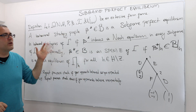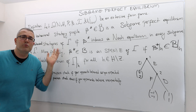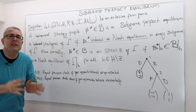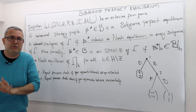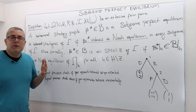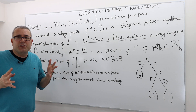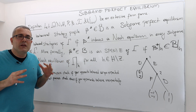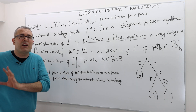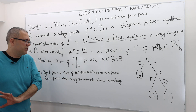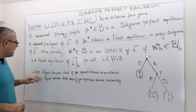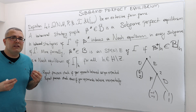So it really doesn't matter whether you use mixed strategy, pure strategy, or behavioral strategy definition — the definition is the same, nothing is changing. Mixed strategy and behavioral strategy definitions are equivalent, because if a mixed strategy is a Nash equilibrium, we know that there's an outcome-equivalent behavioral strategy Nash equilibrium and subgame perfect Nash equilibrium.